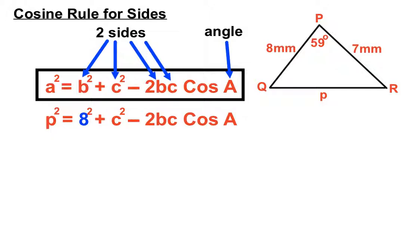So we're going to put eight squared plus seven squared, there are two sides, minus two lots of, there's invisible multiplies between the two and the B and the B and the C there, two lots of eight, lots of seven.